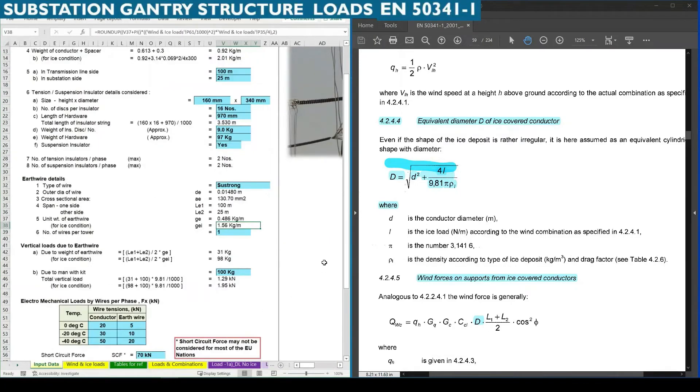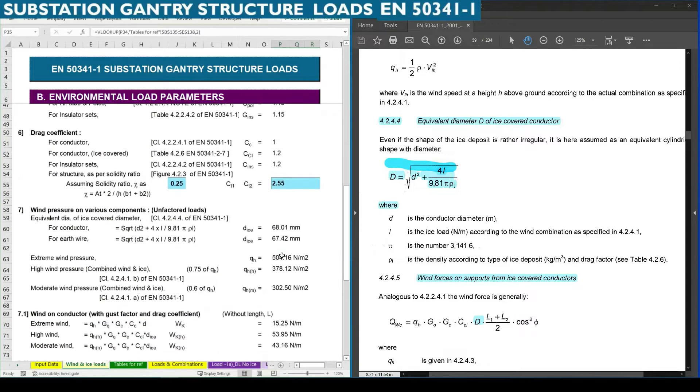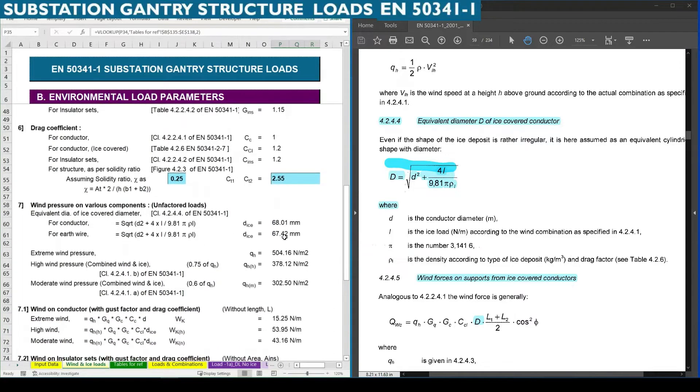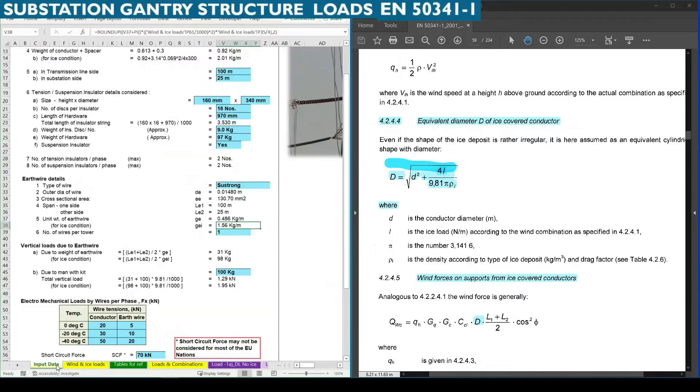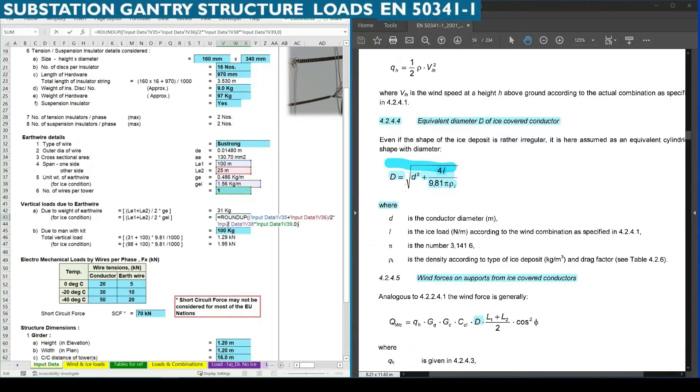We added the earth wire weight to the ice covered area. The area of ice covered is pi D square by 4 times density of ice which is 300 kg per meter cube. This gives an added weight to the earth wire in case of ice, which is why we get higher weight in ice condition.